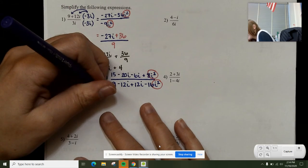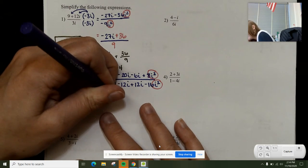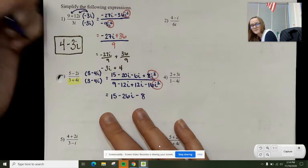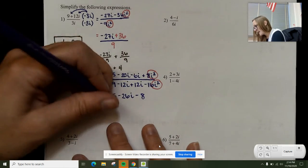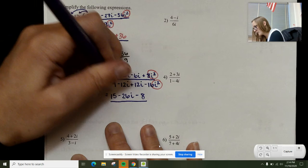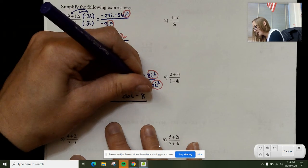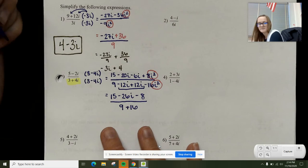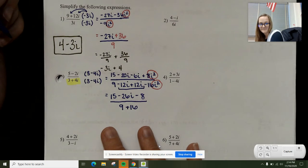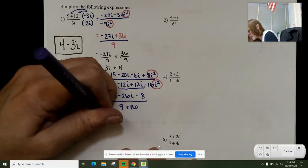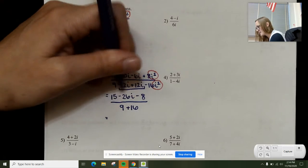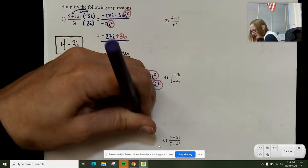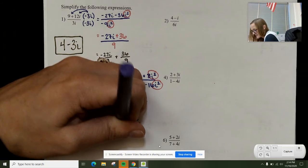The top turns into 15 minus 26i minus 8. The bottom turns into these go away, so I've just got 9 plus 16. Let's combine like terms again and put it in the correct order. 15 minus 8 is 7 minus 26i over 9 plus 16 is 25.